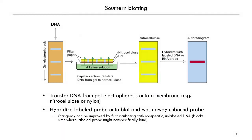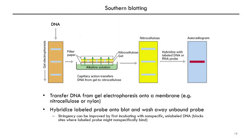In northern blotting, you do essentially the same thing, except you're detecting RNA and not DNA. There are a number of ways you can label fragments of DNA to act as probes — one example is you could PCR amplify them either with radioisotopically labeled or chemically labeled dNTPs.